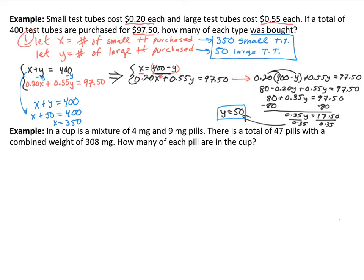There we have our solution. You can always go back and plug 350 in for X and 50 in for Y into both equations to verify. Now for the next example: a cup is a mixture of 4 milligram and 9 milligram pills. There is a total of 47 pills with a combined weight of 308 milligrams. How many of each pill are in the cup?